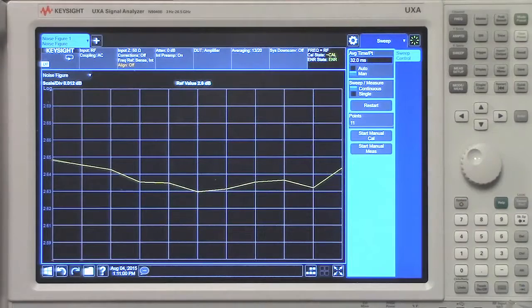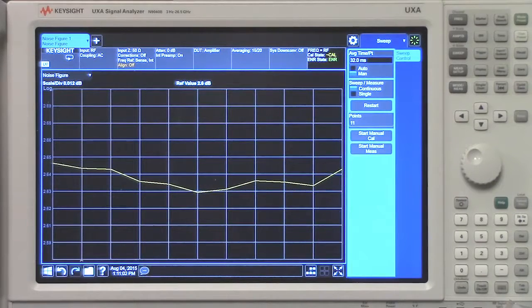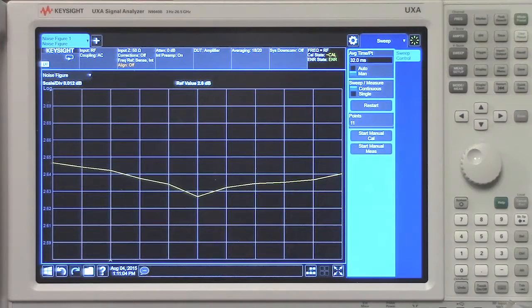If you can't afford longer measurements, then at least use averaging during calibration. This is not as effective as using averaging consistently, but it will improve your accuracy regardless.